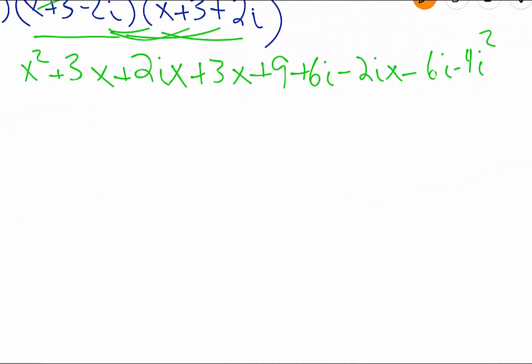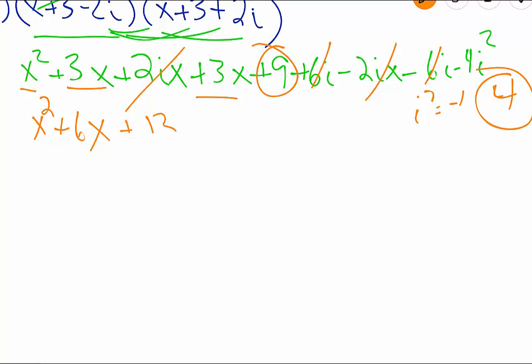Now we're going to clean that up, so we are going to drop down the x², since that's the only one. We have a 3x and a 3x, giving us a 6x. Notice we have a positive 2ix and a negative 2ix. 6i and -6i will also cancel. Keep in mind this -4i², that i² is equal to -1. So that's a -4 times a -1, which makes it a positive 4. So we have 9+4, that gives us 13.